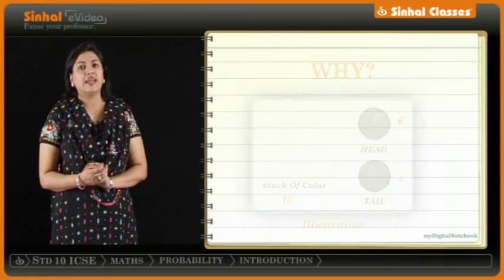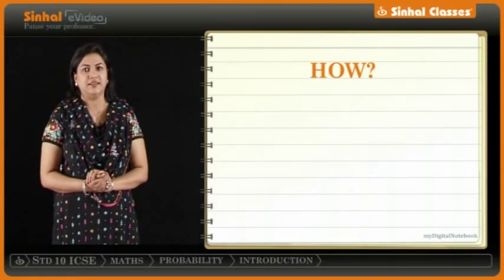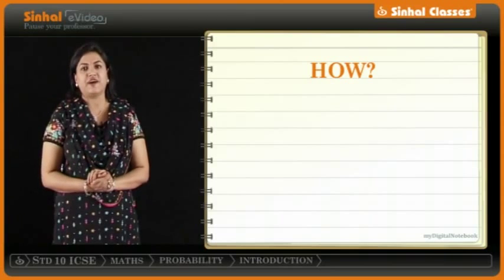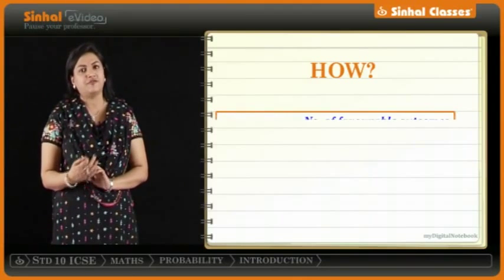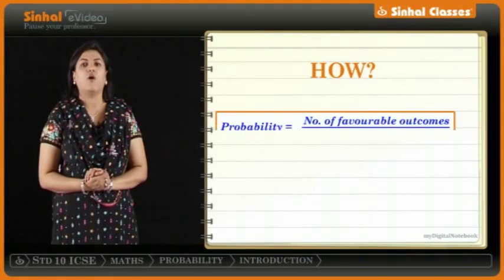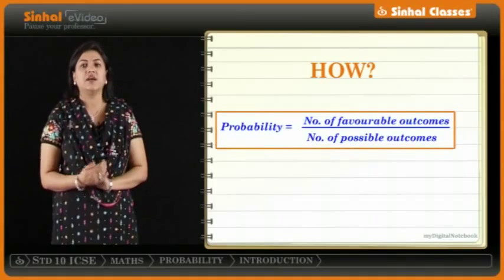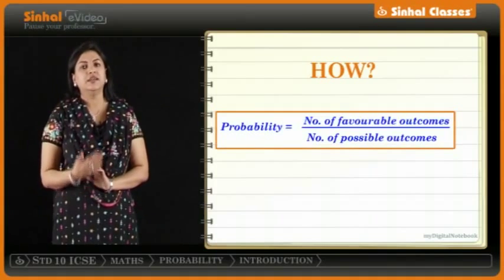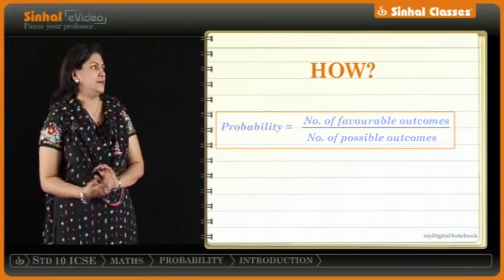Now, how to solve sums on probability? Probability can be defined as the number of favorable or desirable outcomes upon the total number of outcomes.